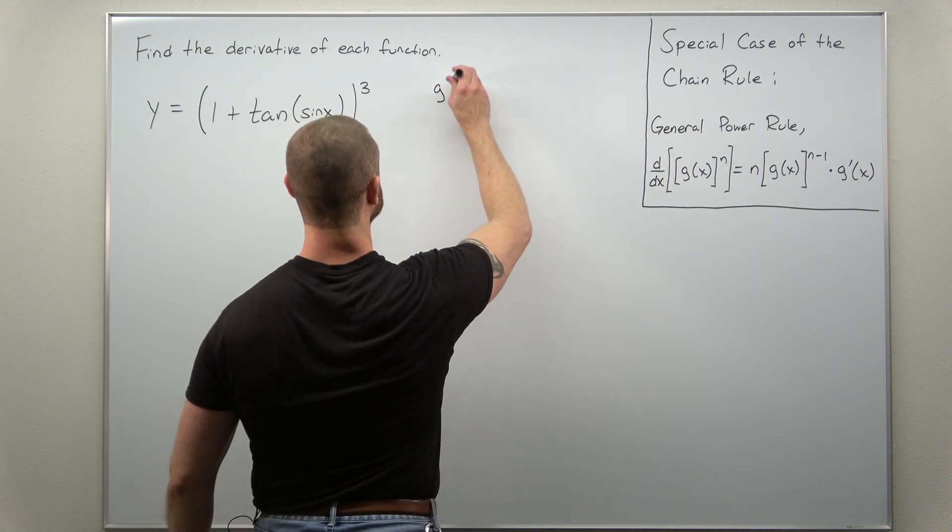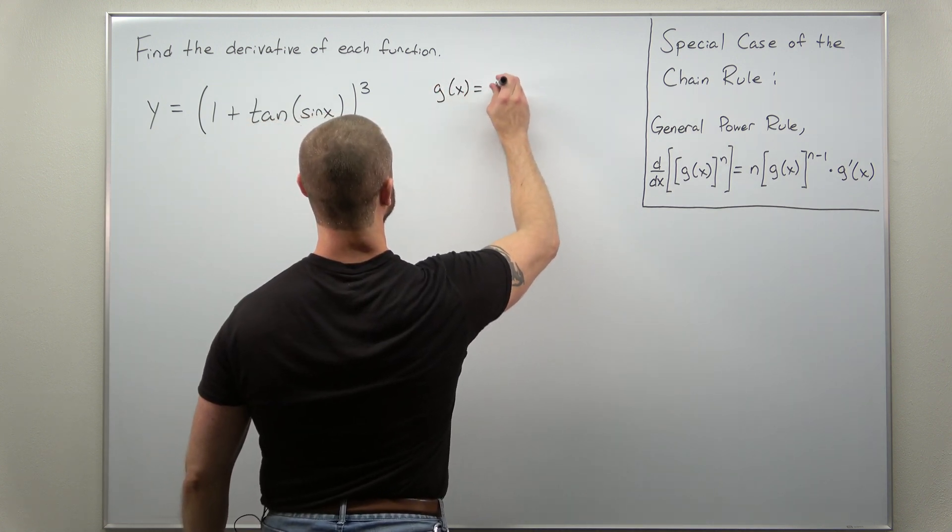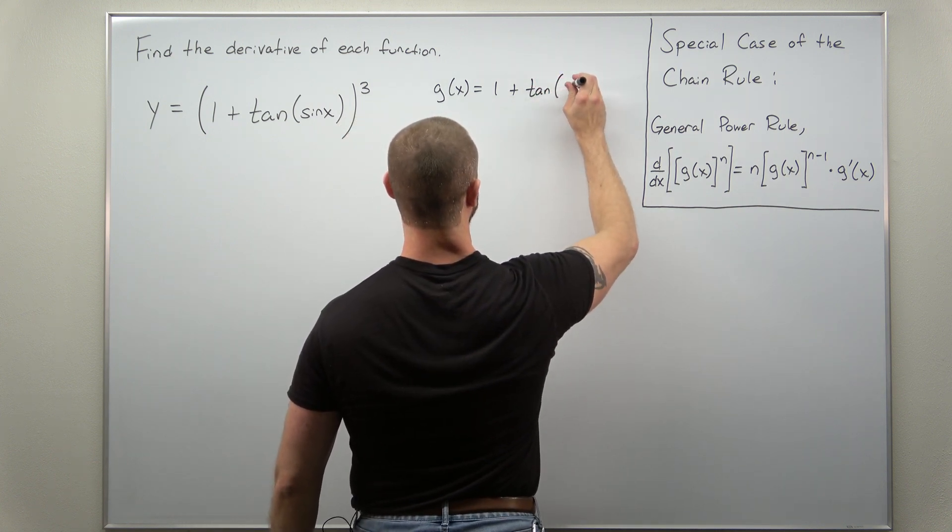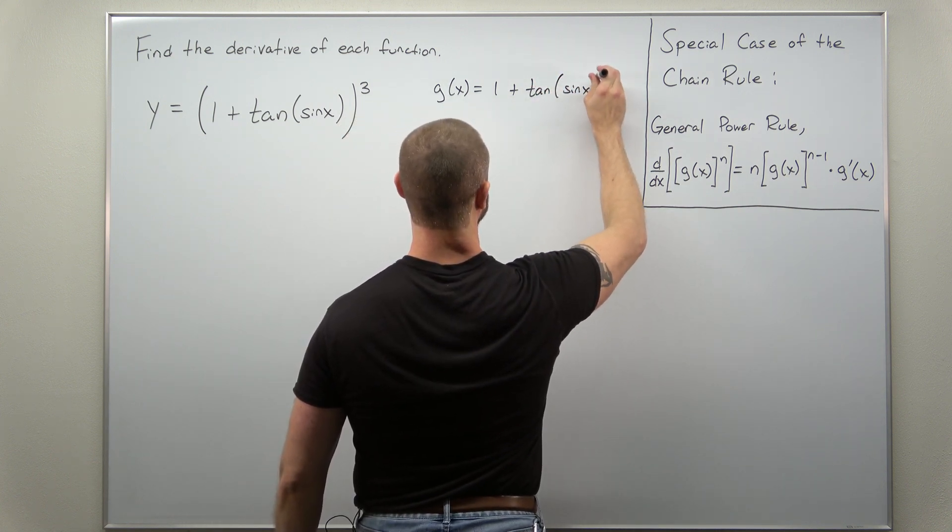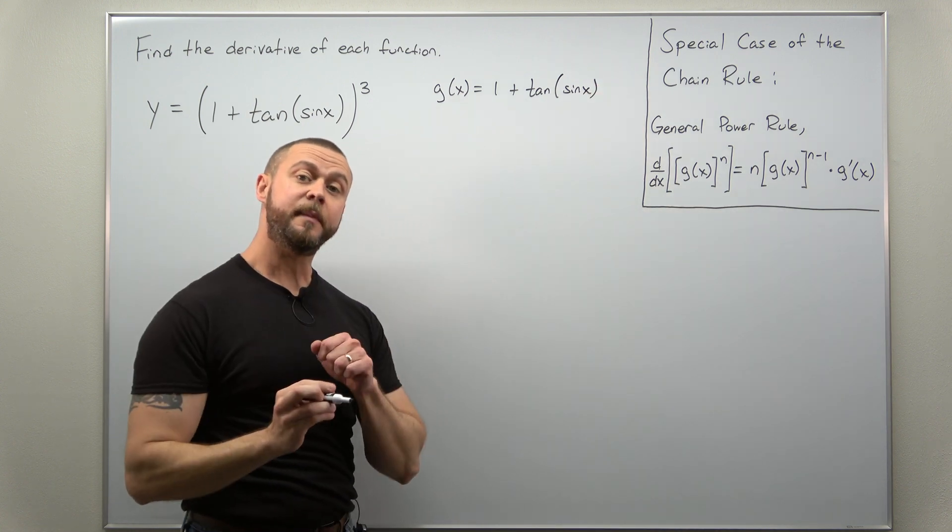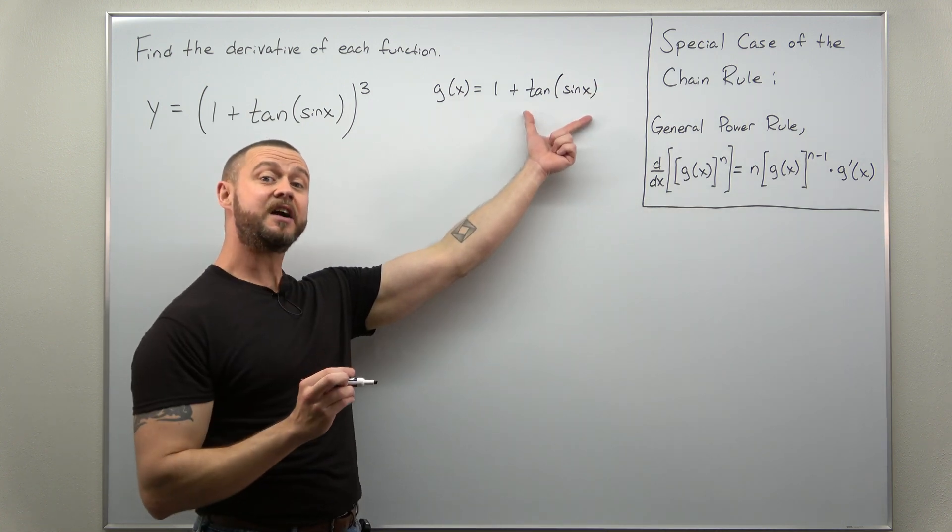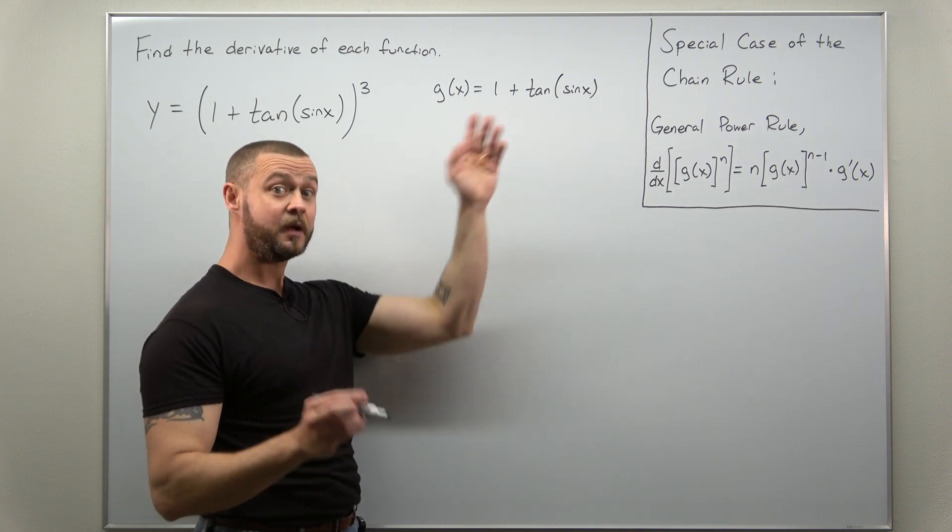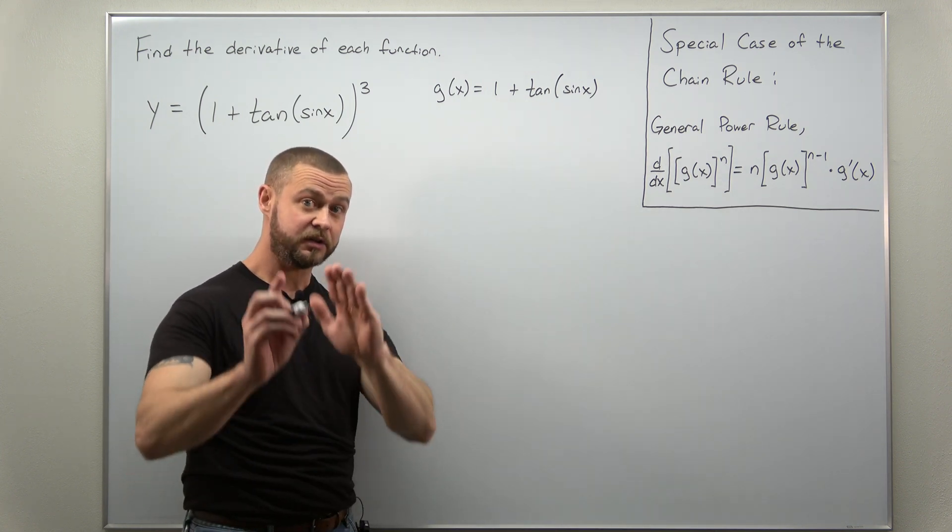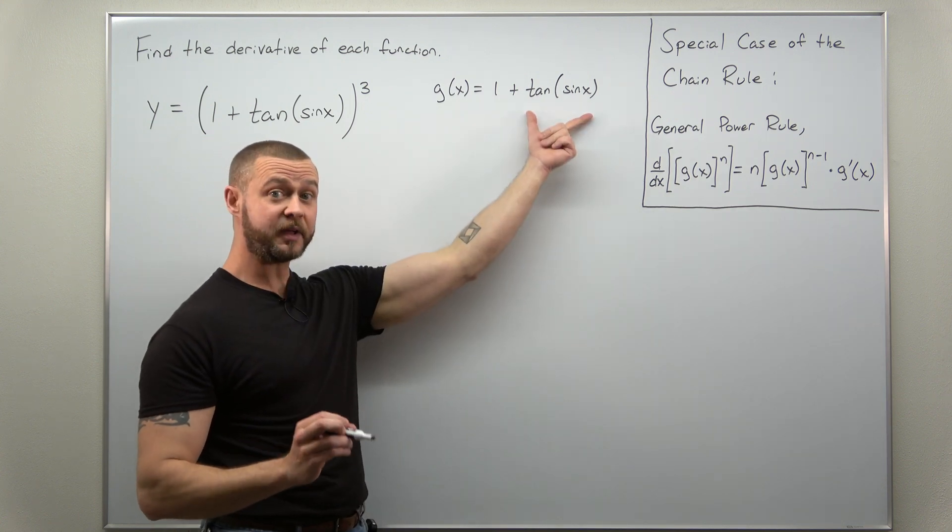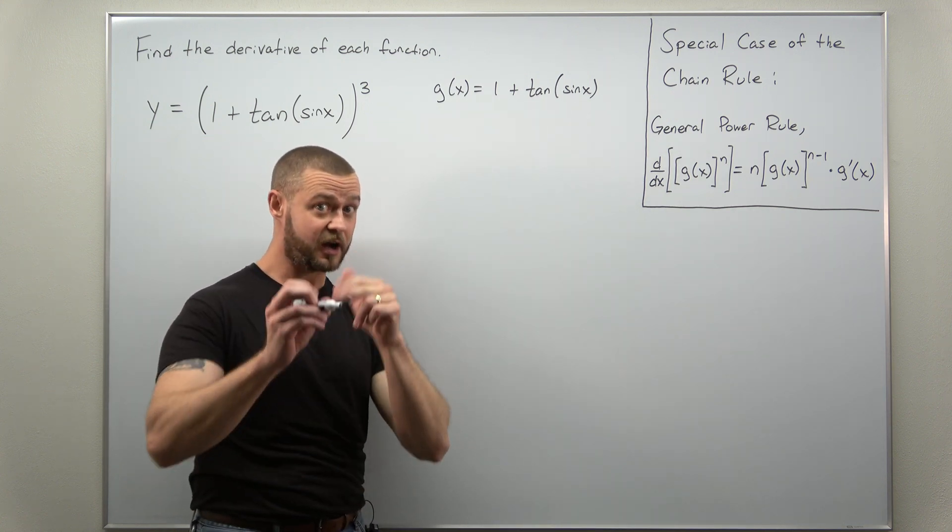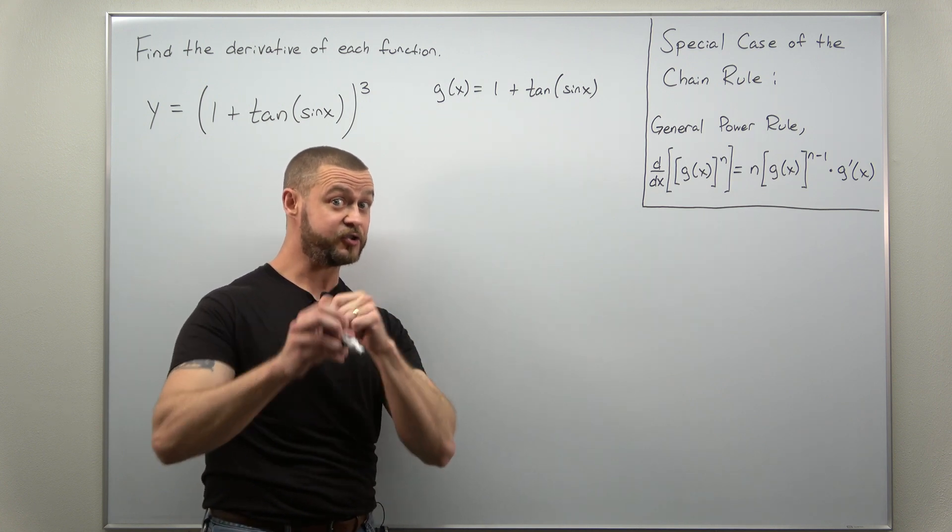The inner function here g of x is 1 plus tangent of sine of x. So make sure you realize here this is a composite, we're not multiplying tangent by sine of x. So again here there's no multiplication, that is a composite. So we're going to differentiate a composite function by using the chain rule.